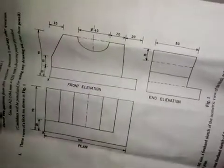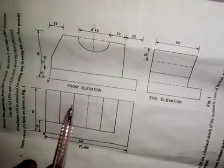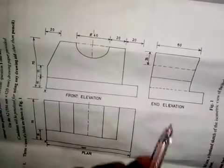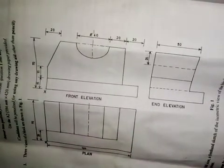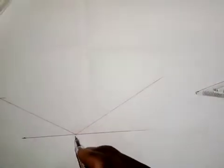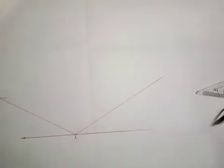We have that the length from here to here is 120 in the plan, and this is the front elevation and this is the end elevation. We take a measurement, and don't forget that point X is here — this is point X. So we have X at this point here.